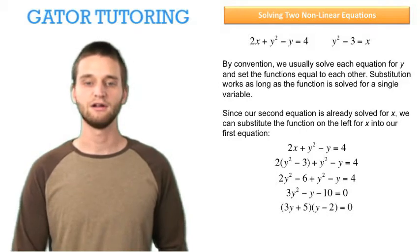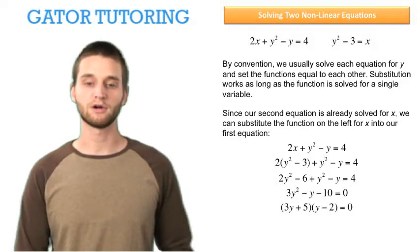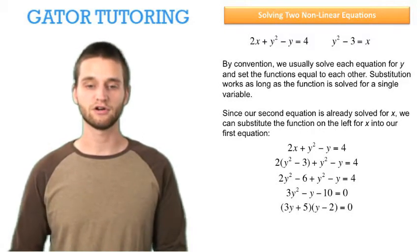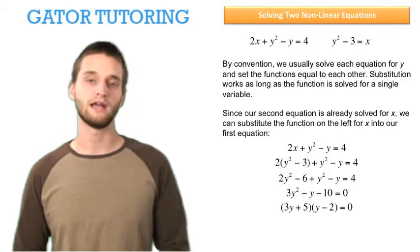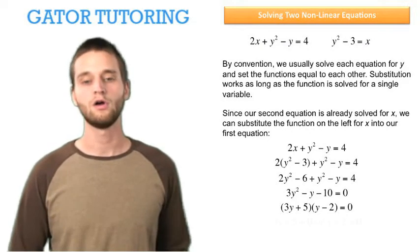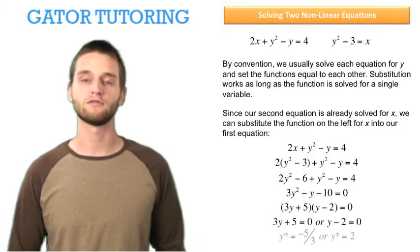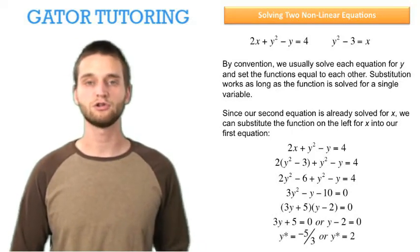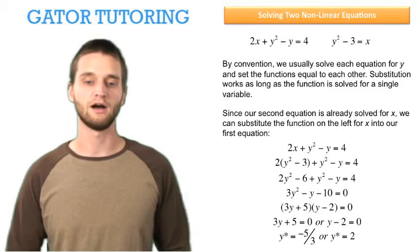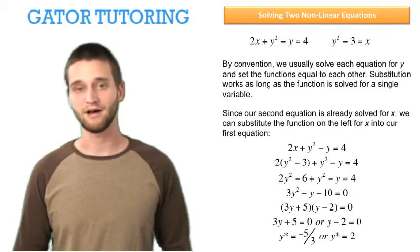If we factor out the quadratic expression into two different functions, 3y plus 5 and y minus 2 equals 0, we can set each one of those functions equal to 0, and then solve for y using algebra. We have two solutions for y star: negative 5 thirds and positive 2.